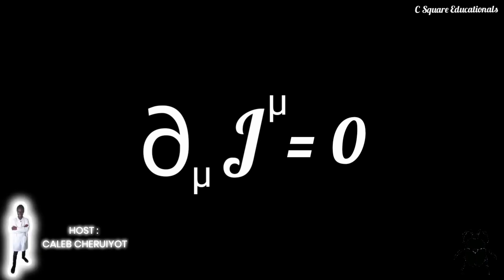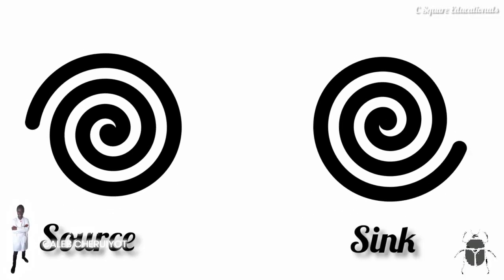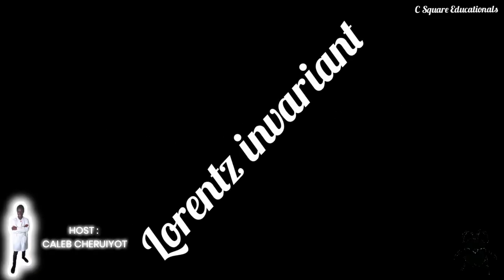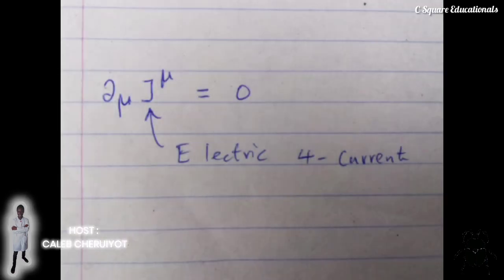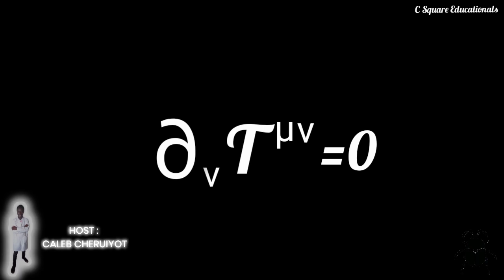In the usual case where there are no sources or sinks — that is, for perfectly conserved quantities like energy or charge — this continuity equation is manifestly Lorentz invariant. Examples written in this form include electric charge conservation, where J is the electric four-current, and energy-momentum conservation, where T is the stress-energy tensor.